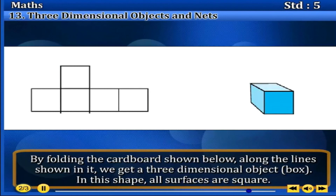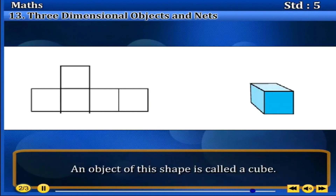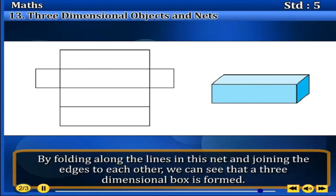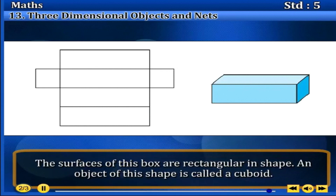In this shape, all surfaces are square. An object of this shape is called a cube. The net of another cardboard box is shown in the figure below. By folding along the lines in this net and joining the edges to each other, we can see that a three-dimensional box is formed. The surfaces of this box are rectangular in shape. An object of this shape is called a cuboid.